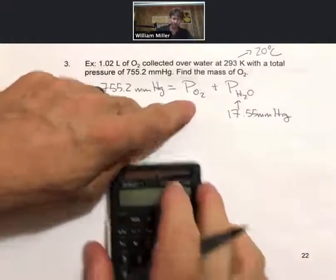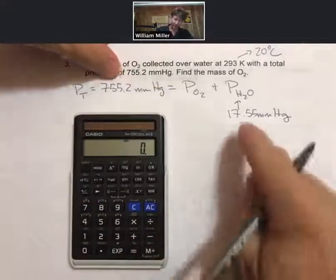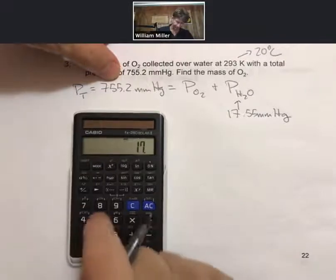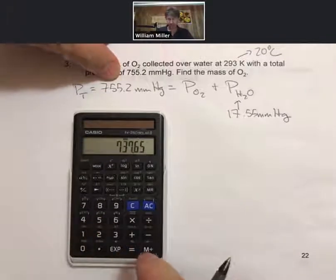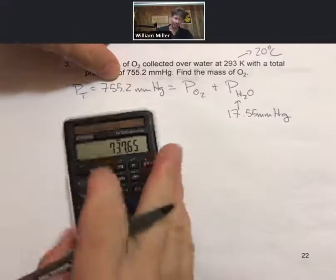Rearranging to solve for the partial pressure of oxygen, we subtract 17.55 off of the 755.2. To three sig figs, we'll just go with 738 millimeters of mercury.